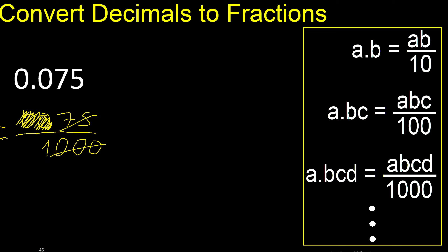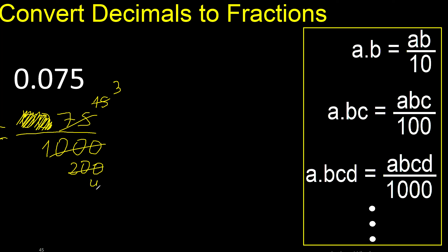This can be simplified because it can be divided by the same number. Divided by 5 — divided by 5 is 15, divided by 5 is 200. Can still be divided by 5 — divided by 5 is 3, divided by 5 is 40.